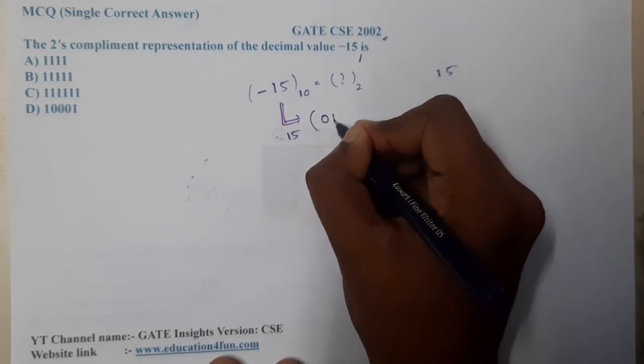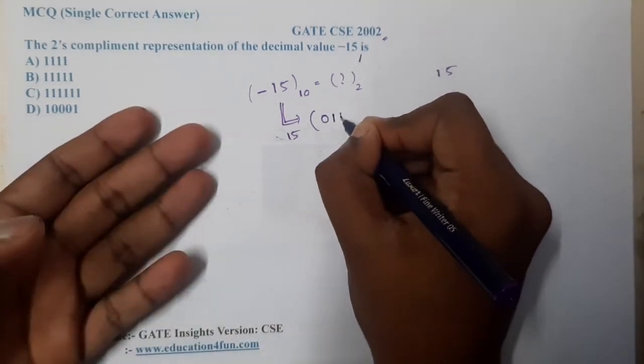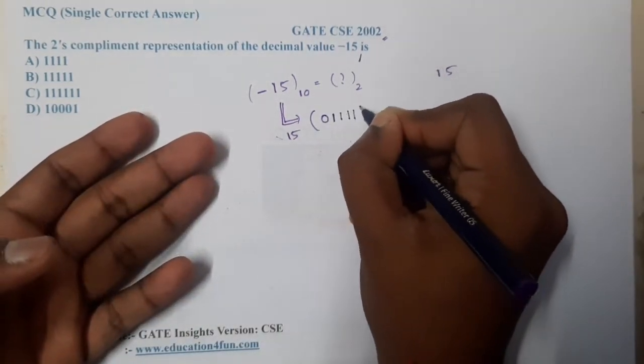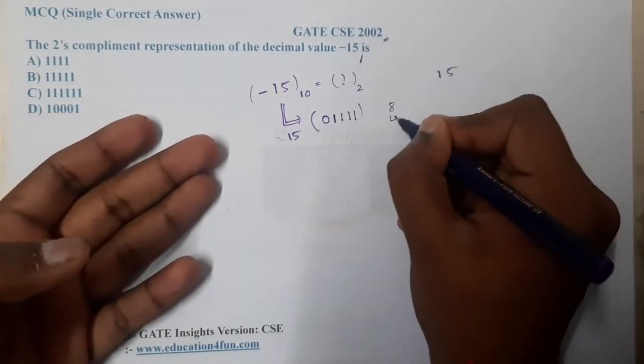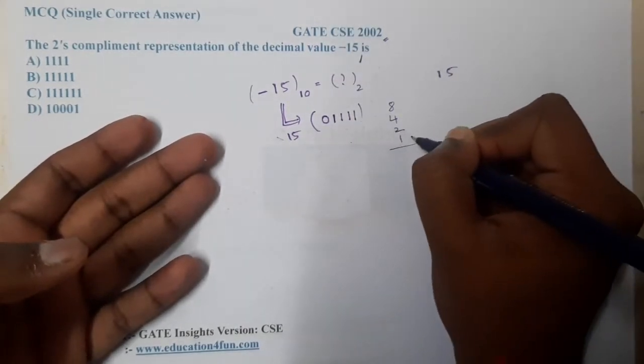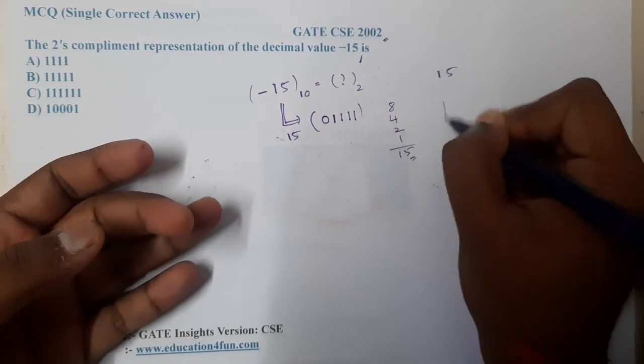So 8 plus 4 plus 2 plus 1, what you will get is nothing but 15. So you can follow the LCM method also but I already know how to directly write it, so I have directly written it.